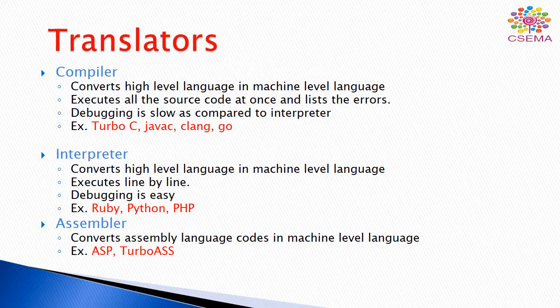Now let's learn about translators. For example, if I am only speaking English and you understand only Hindi, then when we are trying to communicate there is no way to establish communication between us. So we require a translator that understands both Hindi and English. In computer systems it is the same — the computer uses a translator to convert high-level language into machine-level language. The translator provides functionality to understand human-written, high-level codes.